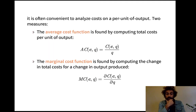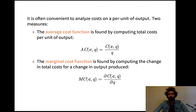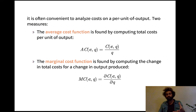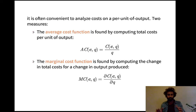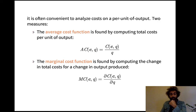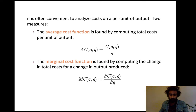A last point on cost functions: it's often useful to look at per-unit-of-output measures rather than total cost. The average cost function is the total cost of producing q units optimally, divided by q — the cost per unit of output. The marginal cost function is the derivative of the cost function with respect to q — in other words, if I increase my production by a little bit, how much do my total costs increase?